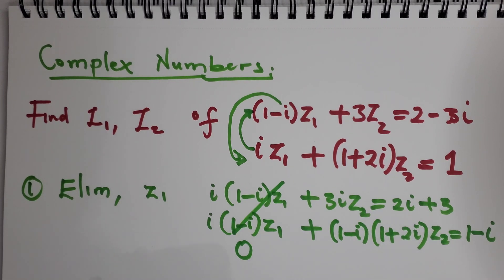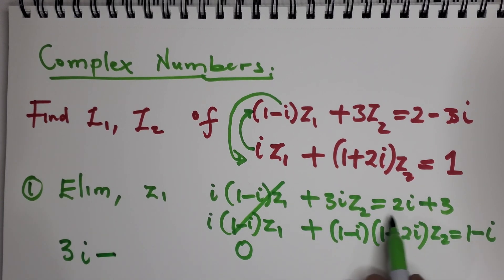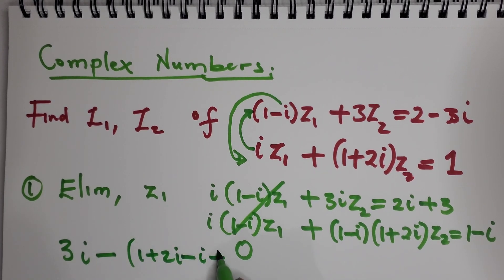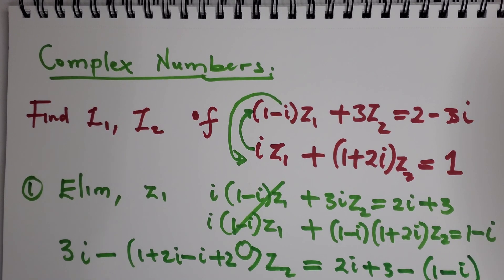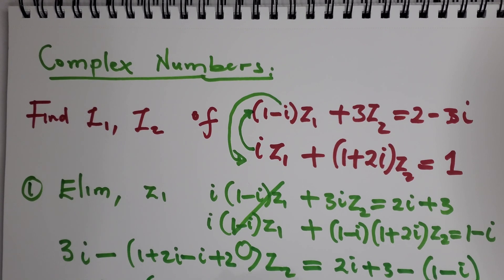Now let's clean this up. We have three i from here, minus the whole thing which is one plus two i, minus i, plus two z2 equals two i plus three minus one, minus i.